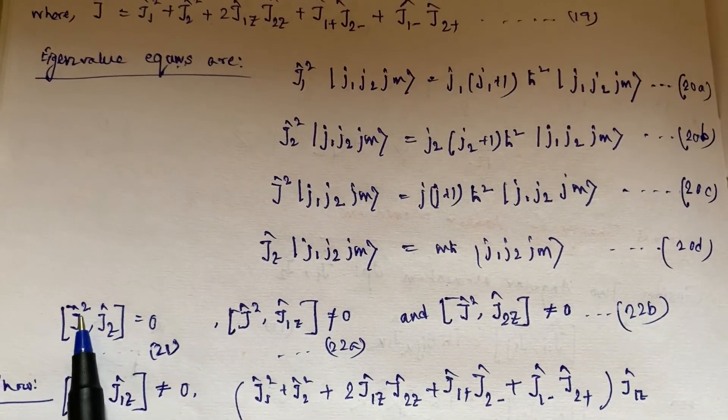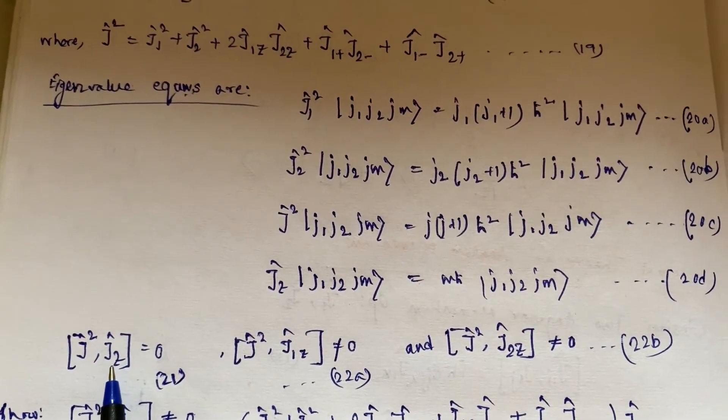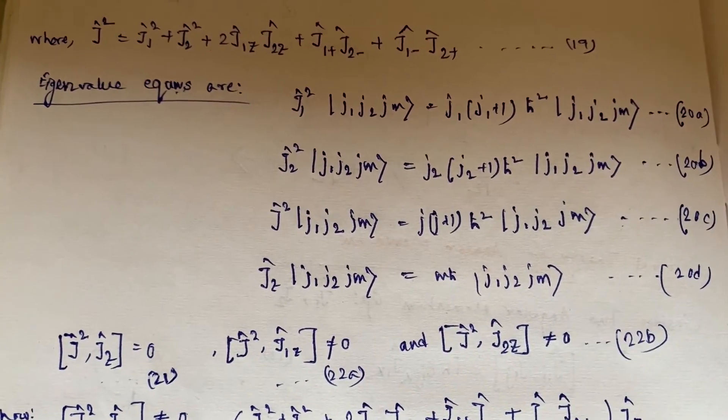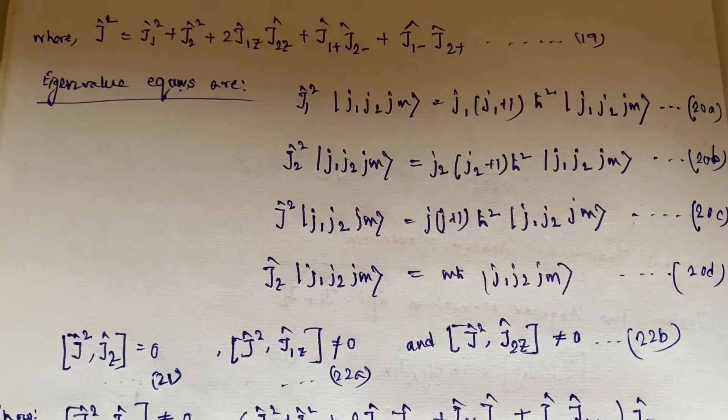Now we know that J² always commutes with Jz, but you can verify it using equation 19 also. It's very easy, just one or two lines will give you this answer.